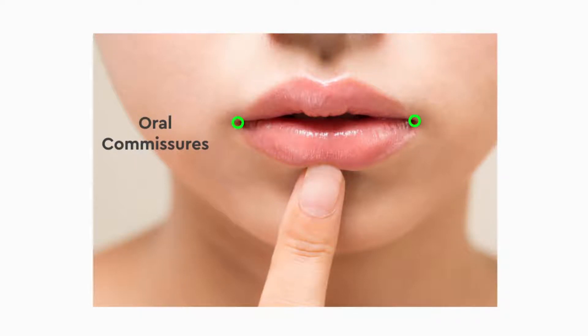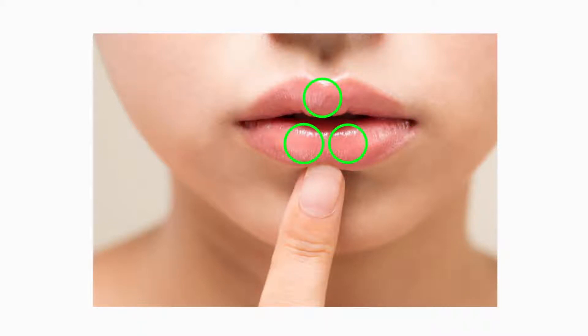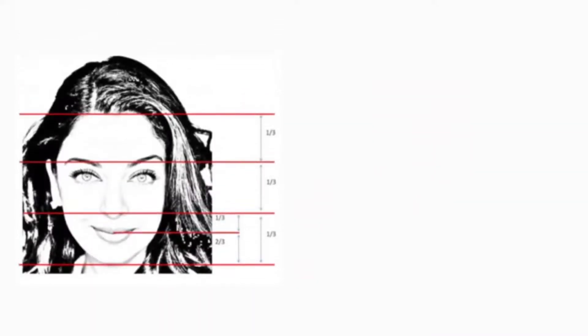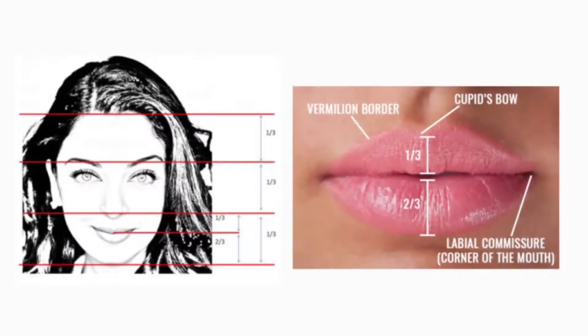If the angle is droopy, it gives a very sad appearance to the face. Also, the middle tubercle in the upper lip should sit correctly in between the two lateral tubercles in the lower lip. The proportion between the upper and the lower lip is also important — the upper lip is usually one-third compared to the